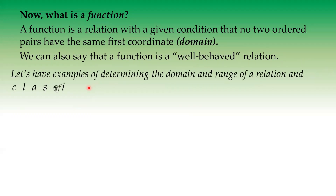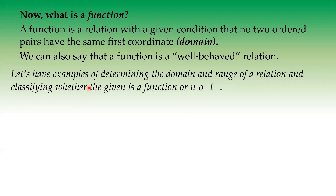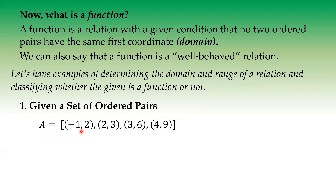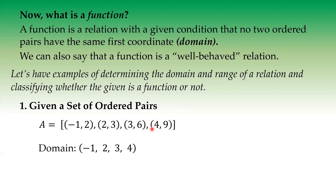So let's have an example of determining the domain and range of a relation and classifying whether the given is a function or not. Number one, I will be giving you a set of ordered pairs. Let's say we have set A with the following coordinates: negative one comma two, two comma three, three comma six, four comma nine. The domain — our x values — are negative one, positive two, positive three, and positive four.